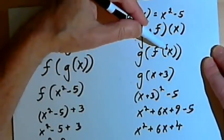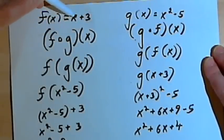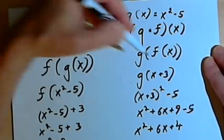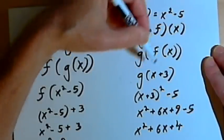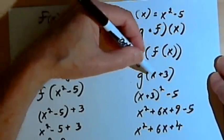Then we know what that innermost function is, f of x, because we're given that. So we take whatever f of x is, in this case it was x plus 3, and we put that where the f of x was. So now we have g of x plus 3.